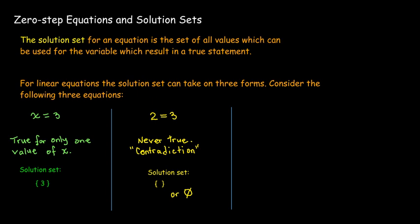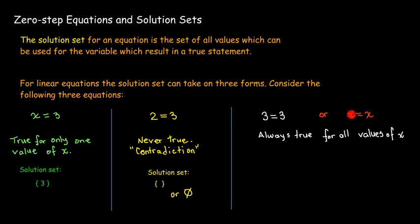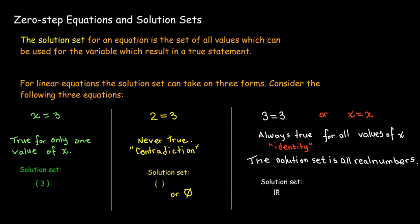The third case is illustrated by equations like 3 equals 3 or x equals x. These equations are always true — 3 always equals 3 and x always equals x. No matter what value of x you put in, it's still going to give you a true statement. These are called identities, and equations which are identities have a solution set consisting of all real numbers. We write all real numbers using the bold-face R, or in interval notation as negative infinity to infinity.